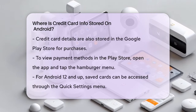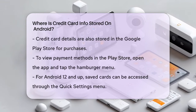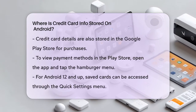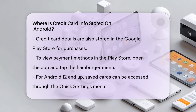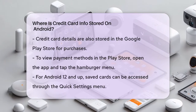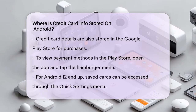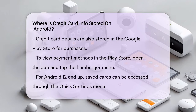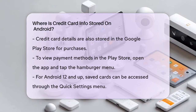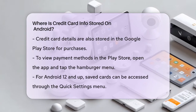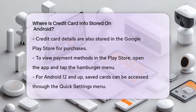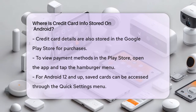For devices running Android 12 and up, you can also access your saved cards through the Quick Settings menu. Swipe down from the top of your phone to access the Quick Settings, expand it by swiping again, and find the setting labeled GPay. Tap on it, and you'll see your saved cards by swiping left and right.